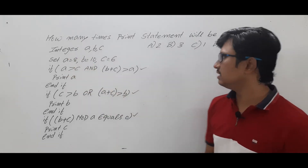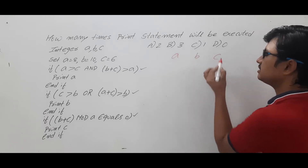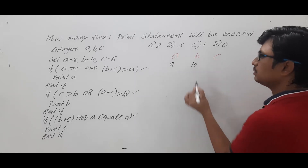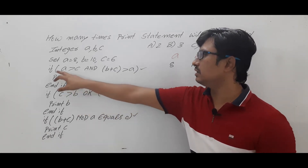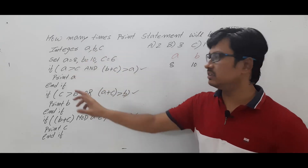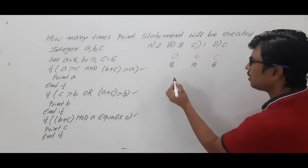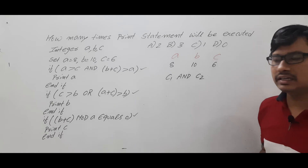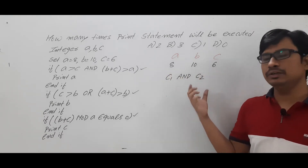Look at the first condition. A=8, B=10, C=6. The condition is: if A greater than C — this is condition 1 — logical AND condition 2. If you have learned logical operators: condition 1 AND condition 2 means if both conditions are true, then only the entire condition will be true.